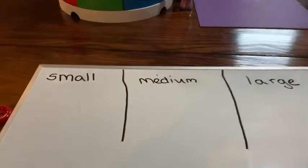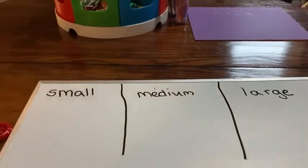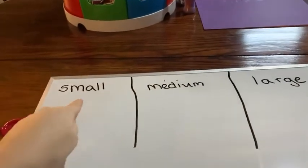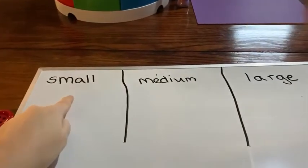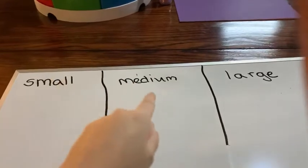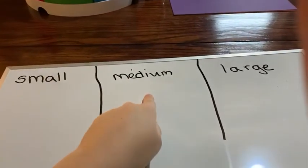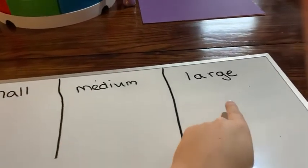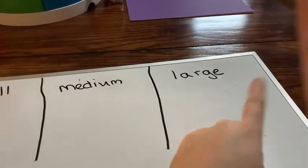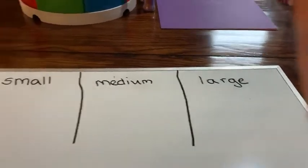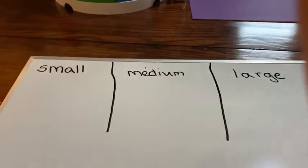Now we're going to sort objects and rank them small, medium, large. Small, medium, large.